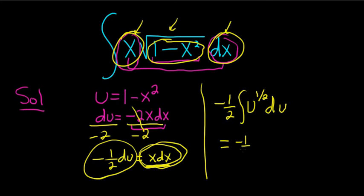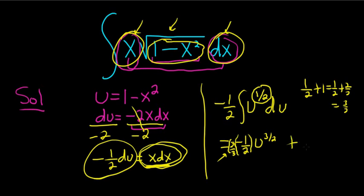So the negative 1 half hangs out. We add 1 to the exponent here. It's 1 half plus 1. That's the same thing as 1 half plus 2 halves, which is 3 halves. This will be u to the 3 halves. And then we're dividing by 3 halves. So that's the same thing as multiplying by 2 thirds. When you divide by 3 halves, it's the same thing as multiplying by 2 thirds plus c.